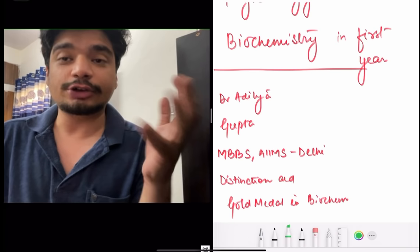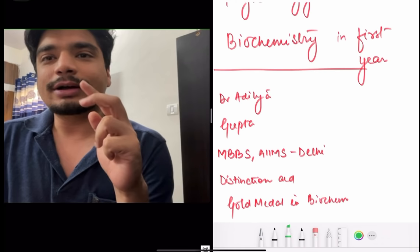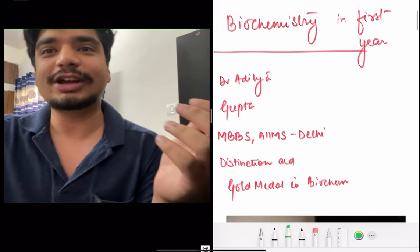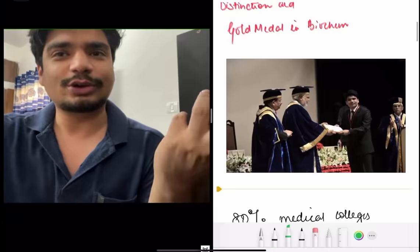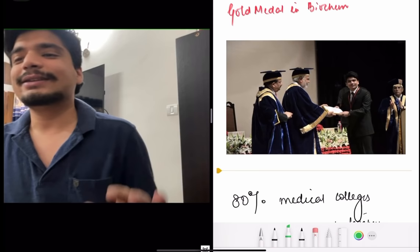I've already made videos about the books that you can use for your Physiology and Biochemistry so you can check out those videos. The reason I feel confident about how to study Physiology and Biochemistry, I got a distinction in Biochemistry and a gold medal from none other than our Prime Minister Shri Narendra Modi. So I have a little bit of advice, let's go ahead and get started.